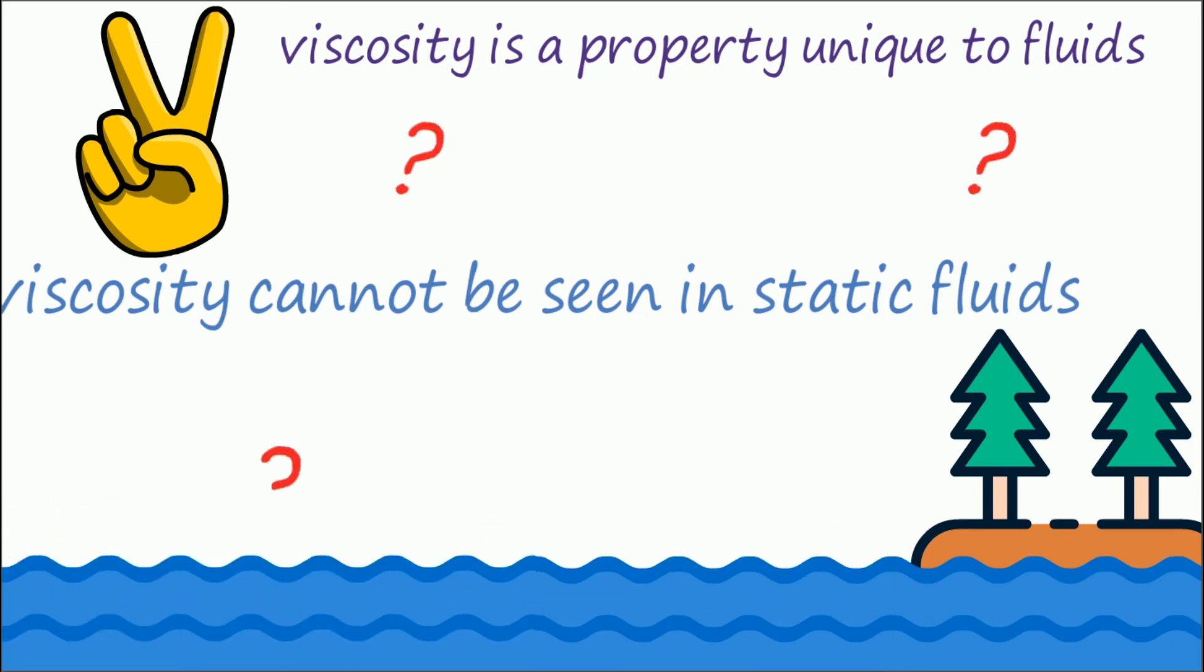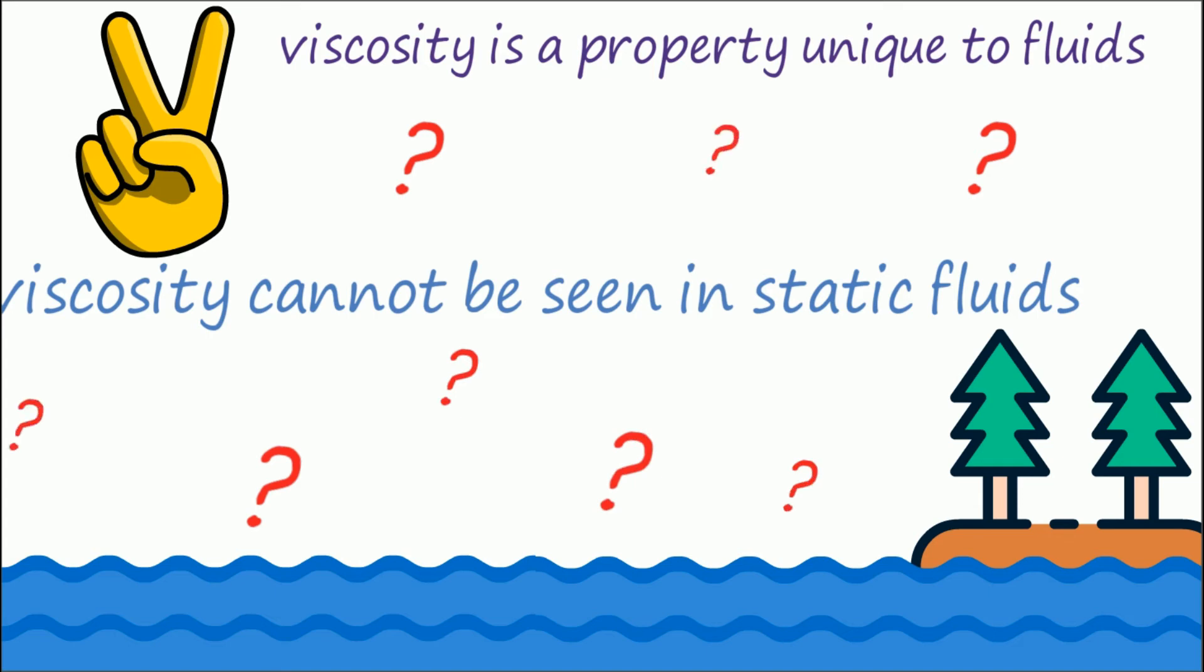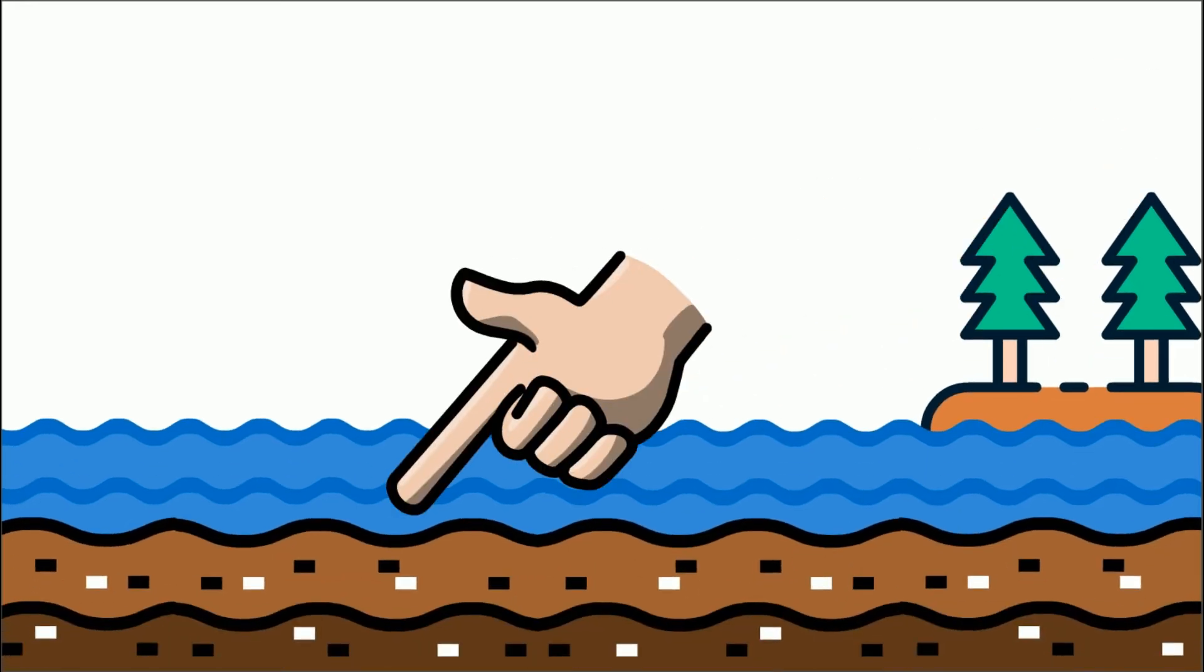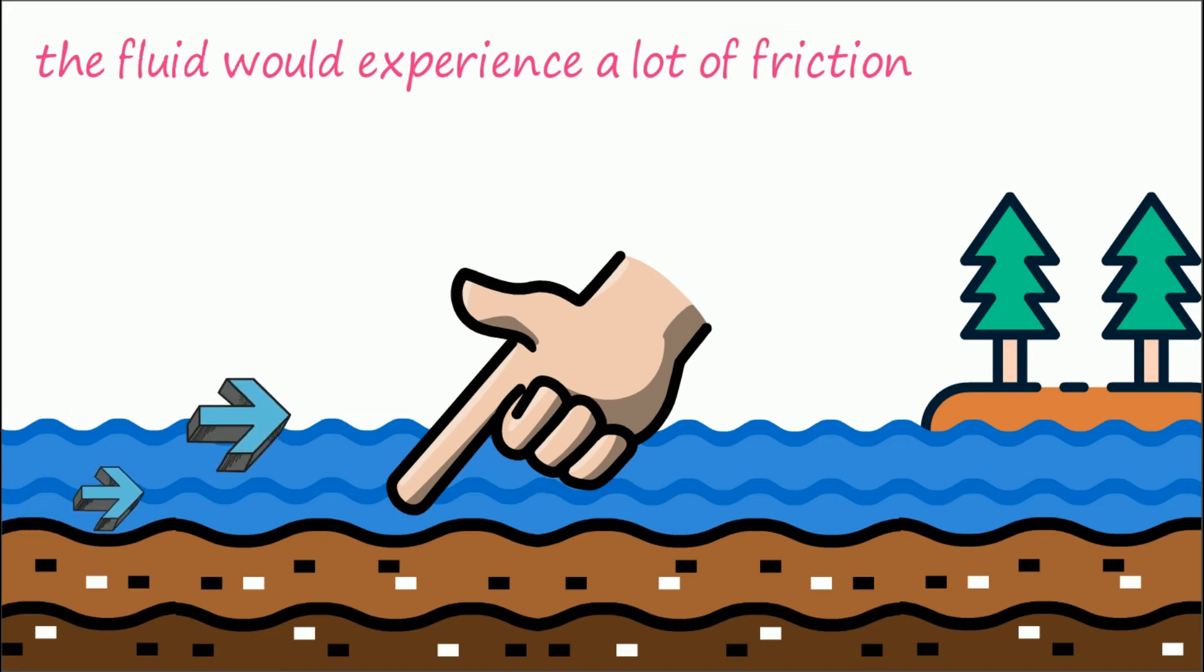Now you might ask why that is. The answer is really really simple. Just think of a river. Now this river would definitely have a riverbed where the fluid is in contact with the surface, and this is where the fluid would experience a lot of friction, thus moving slower when compared to the surface of the liquid.